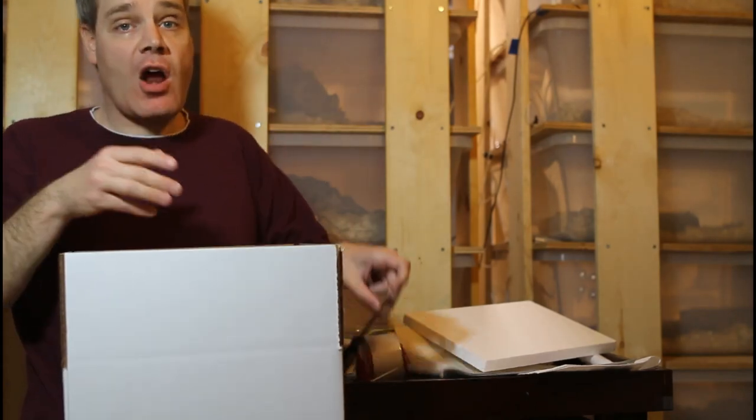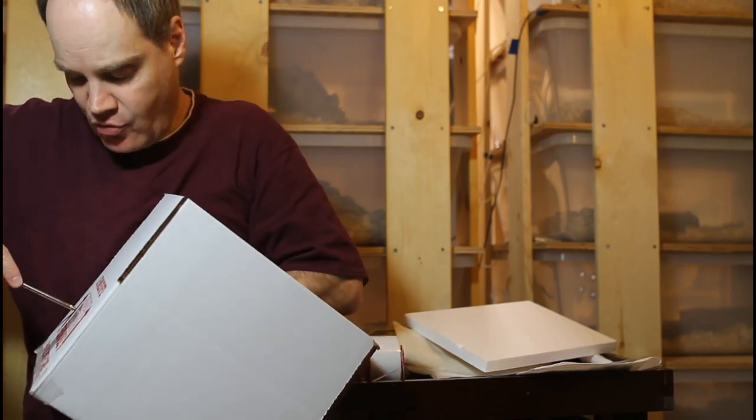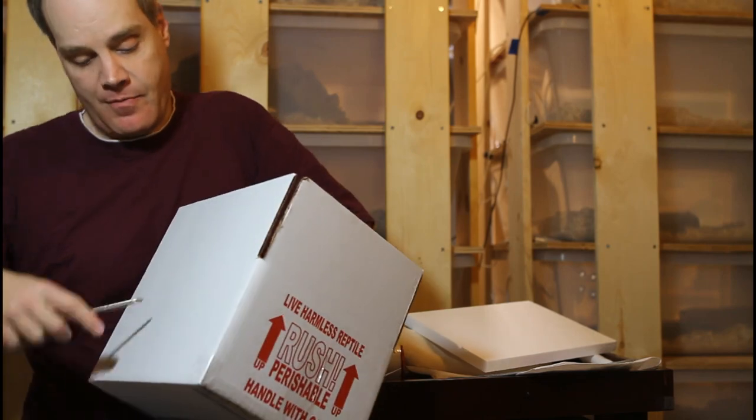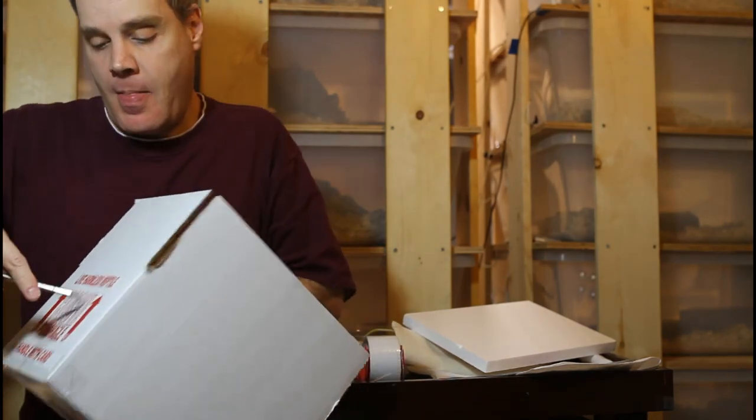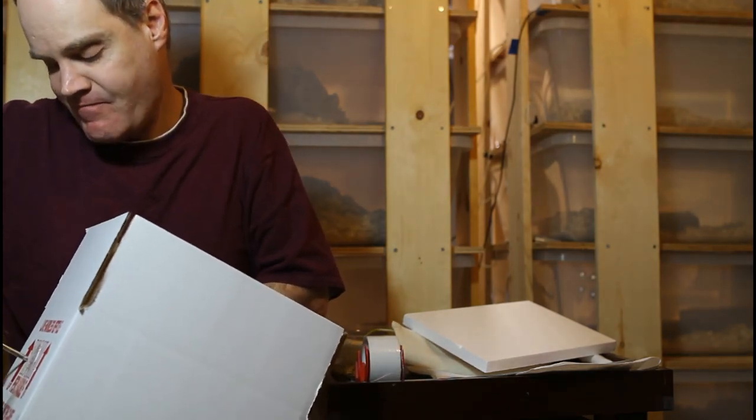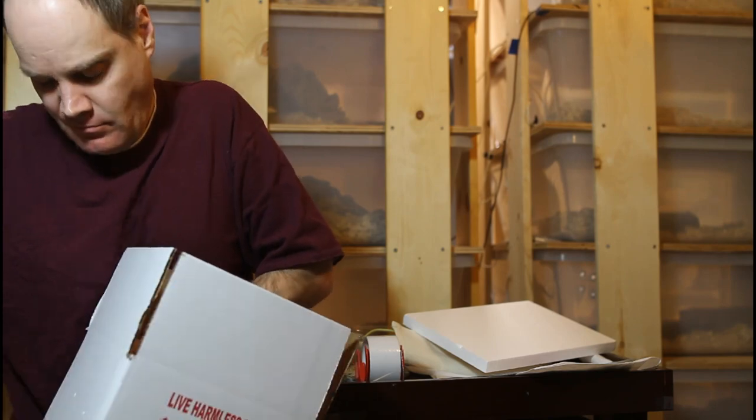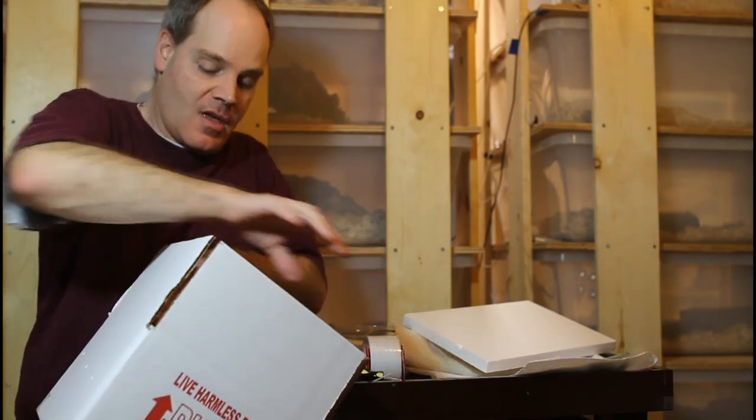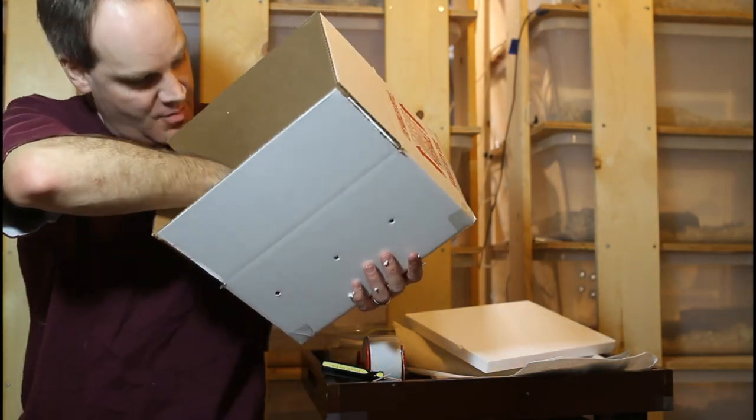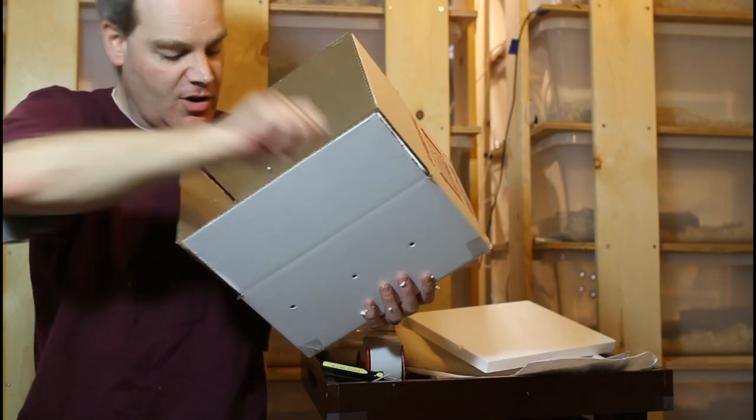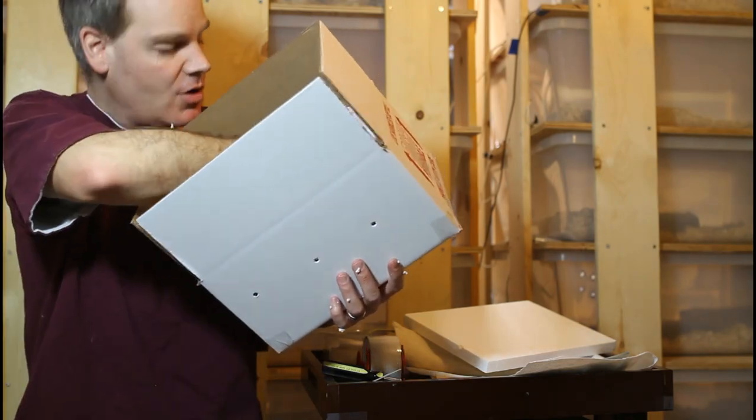So once you have your styrofoam in, you want to punch some air holes. I'm just using a screwdriver. And I just punch three air holes on each of the long sides and then two on each of the short sides. And then usually you have all this styrofoam, little pieces of styrofoam. I just get rid of them because you don't want these all over the place, kind of messy. So just get rid of what you can.